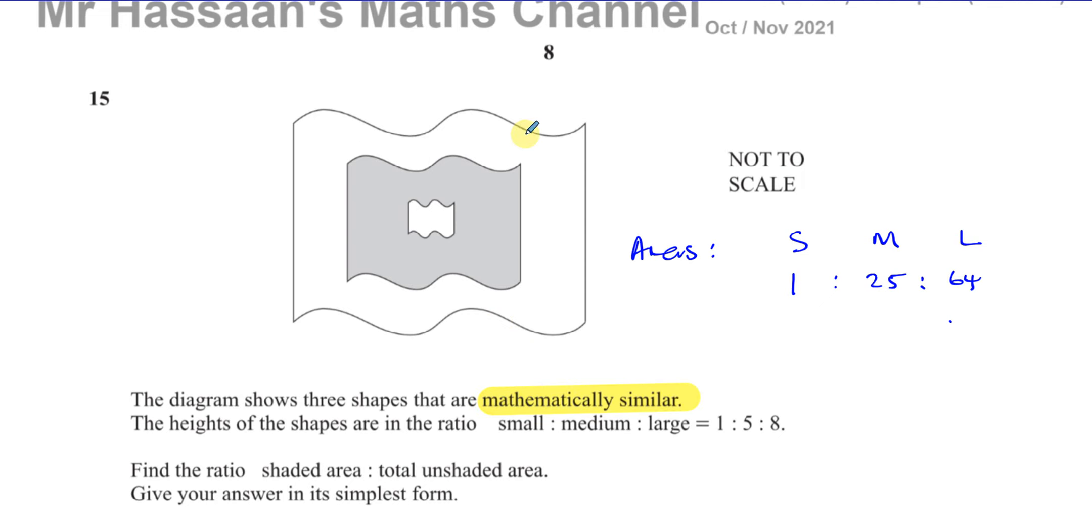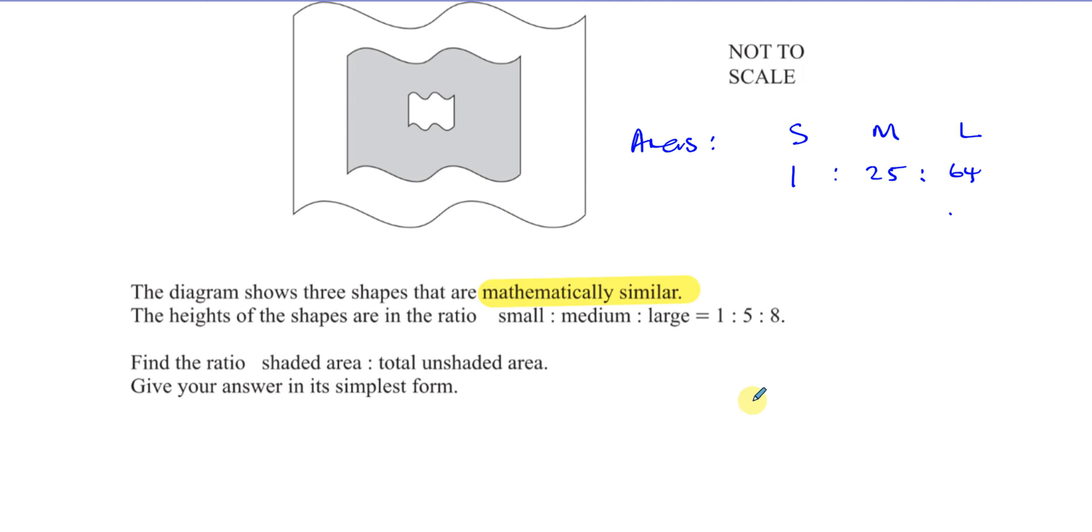So now, knowing that, we can now try to figure out what portion of this is the shaded area. The shaded area is basically the middle one but take away the part in the middle. So the shaded area is going to be, think about the shaded area as a proportion. The shaded area is going to be 25 minus 1. And then we've got the total unshaded area. So that's 25 minus 1, which is going to be 24.